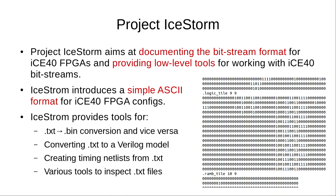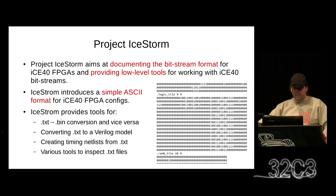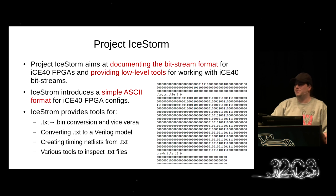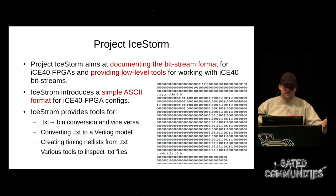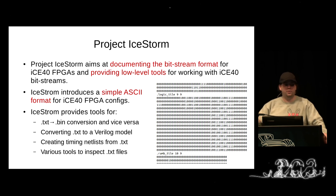In Project IceStorm, we did a detailed look at this FPGA, documented the bitstream format, and wrote low-level tools to work with the bitstreams. We also defined a very simple text file format to specify each and every individual configuration bit. On the right side of this slide you can see an excerpt — for example, 'logic tile 9 9' with its coordinates, then a block of ones and zeros. You can look up the documentation and decipher what each bit means.